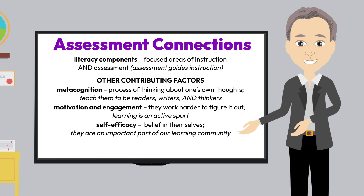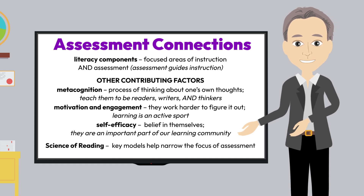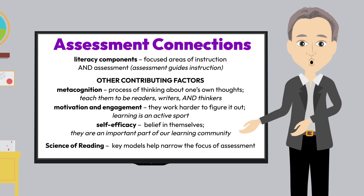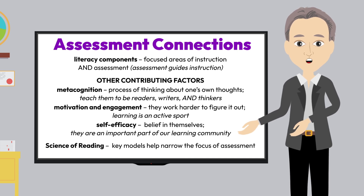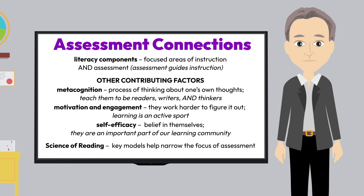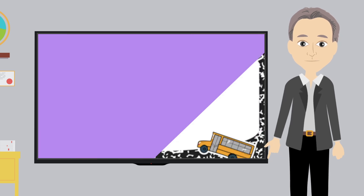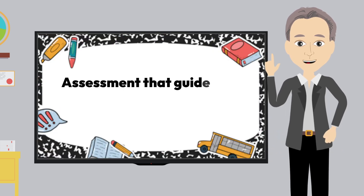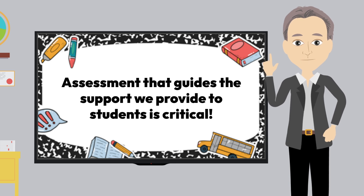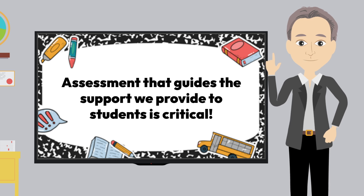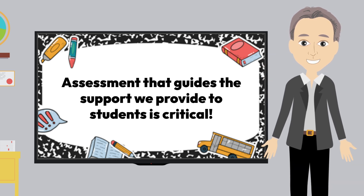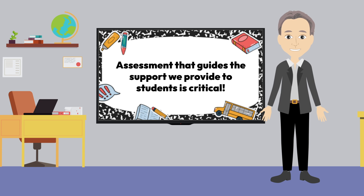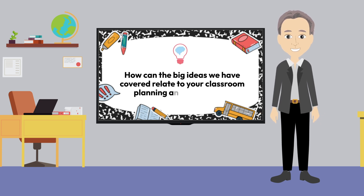Our last big connection for assessment was to the science of reading, and the fact that key models such as the simple view of reading and Scarborough's Reading Rope help us to narrow the focus of instruction and consequently helps us narrow the focus of assessment. Assessment that guides the support we provide to students is critical to helping all students develop to their highest potential, but this must be done within an environment that ensures all students feel they are part of our safe learning community. This wraps up our last stop and jot for Module 3. How can the big ideas we have covered relate to your classroom planning and instruction?